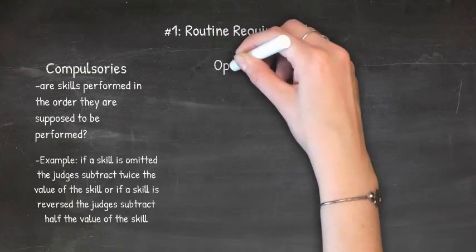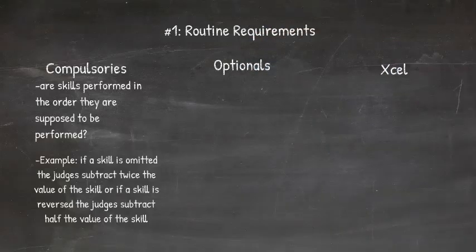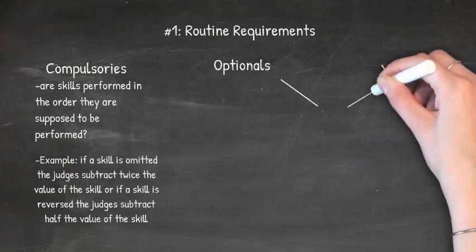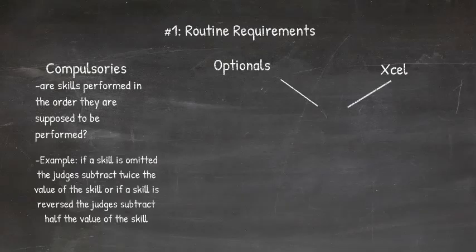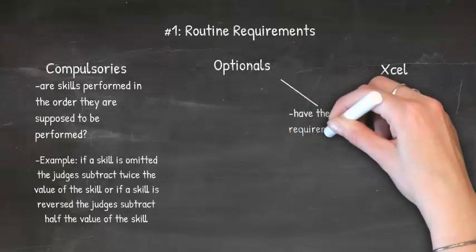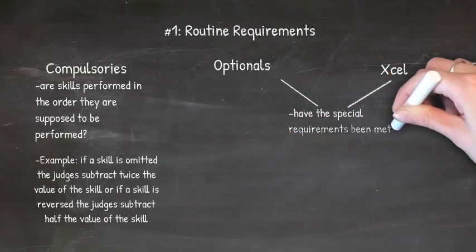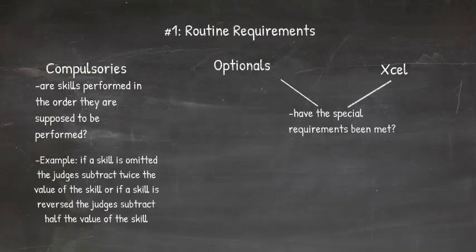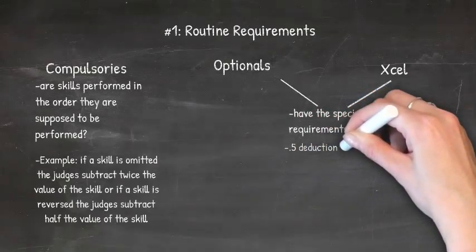For optionals and Excel routines it's a little different because gymnasts can make up their own routines. However, they have to fulfill specific special requirements for each routine. As gymnasts perform, judges write down a shorthand of the skills and at the end of the routine go back to confirm the special requirements were met. If a special requirement is missing, that is a 0.5 deduction, which is a big deal.